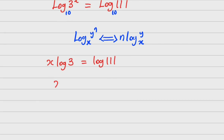So to find x, we divide both sides by log 3, so that x equals log 111 divided by log 3.